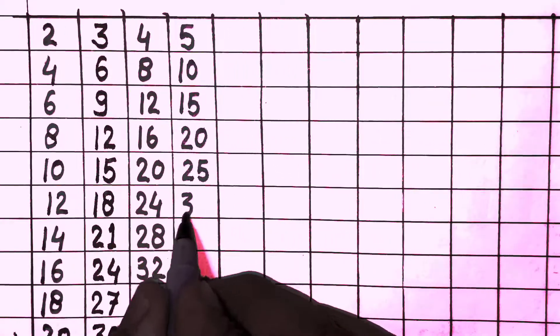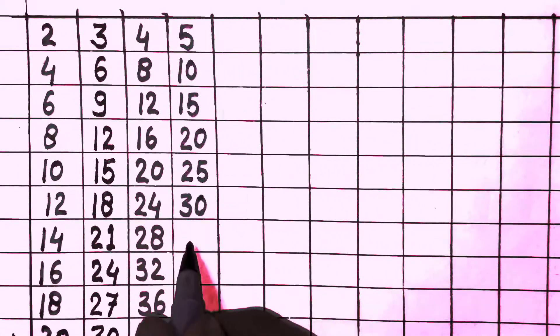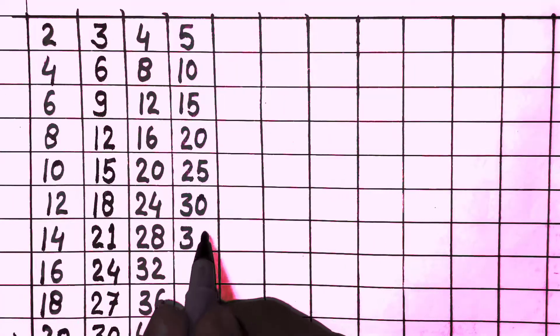5 times 6 is 30, 5 times 7 is 35, 5 times 8 is 40, 5 times 9 is 45, 5 times 10 is 50.